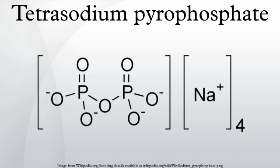In toothpaste and dental floss, sodium pyrophosphate acts as a tartar control agent, serving to remove calcium and magnesium from saliva and thus preventing them from being deposited on teeth. Tetrasodium pyrophosphate is also used in commercial dental rinses before brushing to aid in plaque reduction.